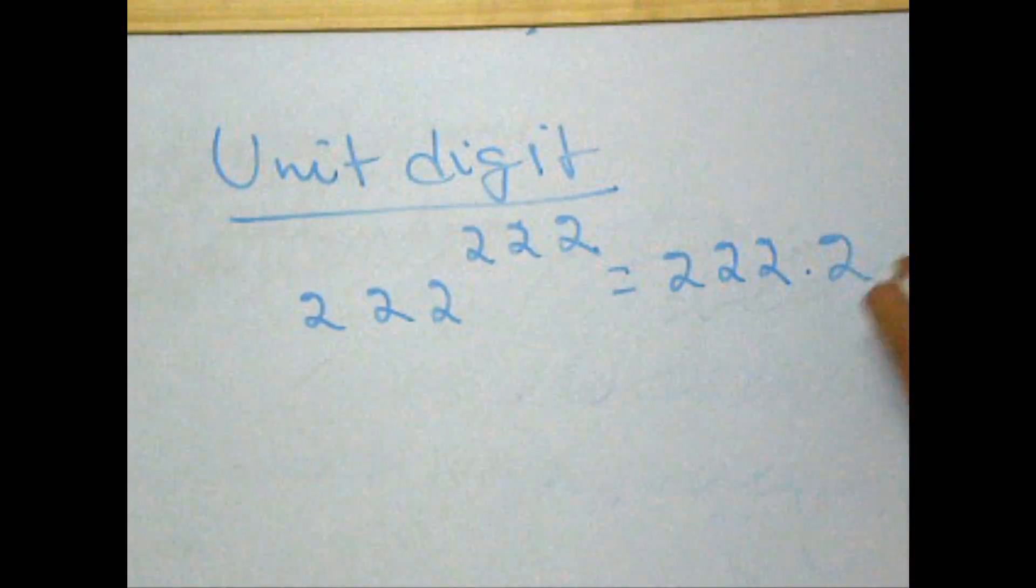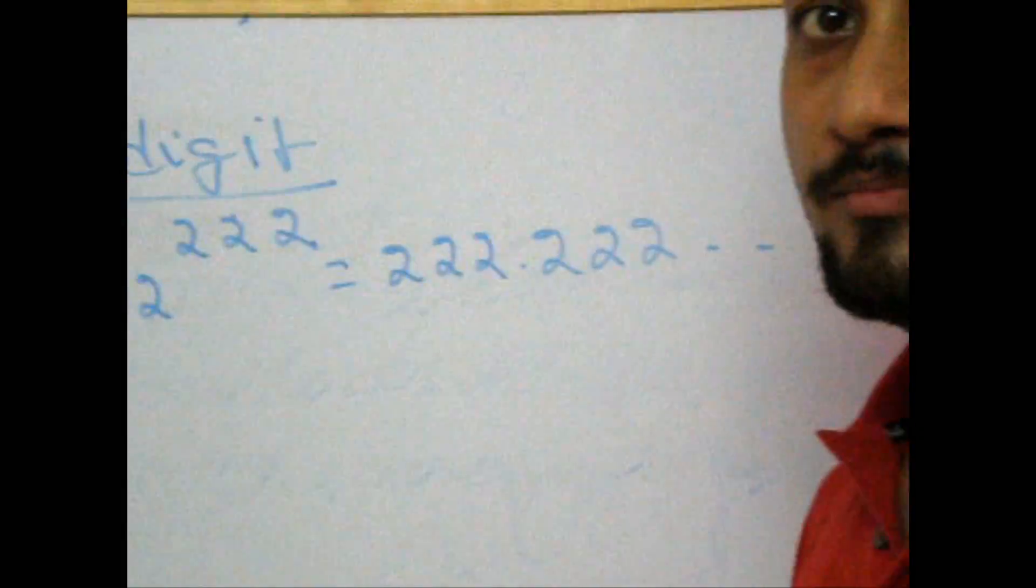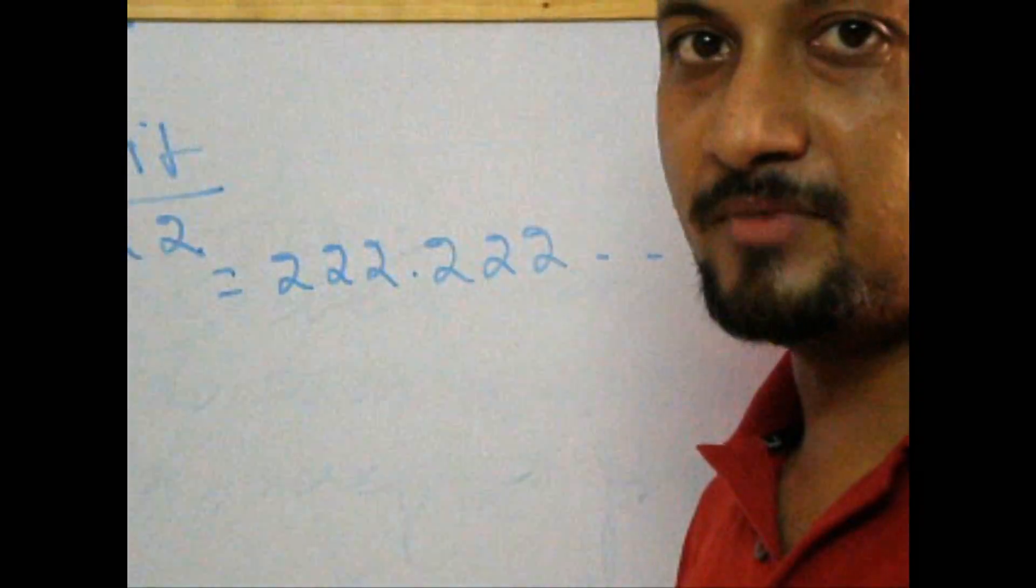Now, unit digit of a product is dependent on product of unit digit of multiplicands. I repeat, unit digit of a product is dependent on product of unit digit of multiplicands.